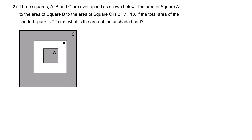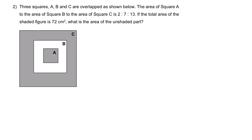Question 2. Three squares A, B and C are overlapped as shown below. The area of square A to the area of square B to the area of square C is 2 is to 7 is to 13. If the total area of the shaded figure is 72 cm², what is the area of the unshaded part?